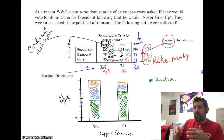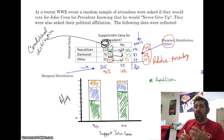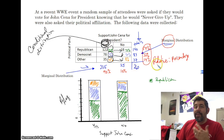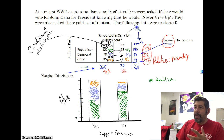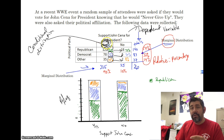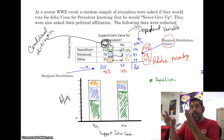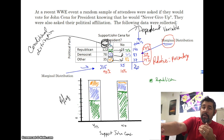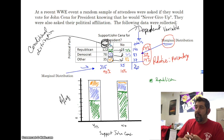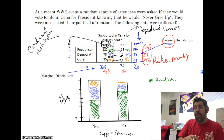Democrats were kind of close but there's still a 20% difference, which is a pretty big difference. Later we'll talk about whether that is a statistically significant difference. For now, this looks like there is some association between whether you support John Cena and what party you're in. So we would say supporting John Cena for president and political party are dependent variables — there is an association. Having no association between two variables means they are independent.